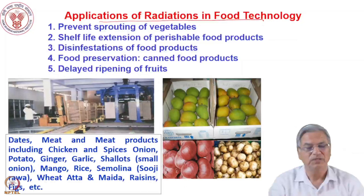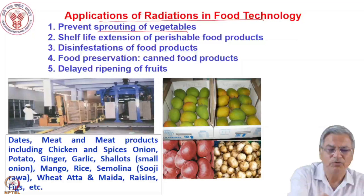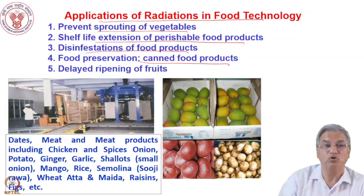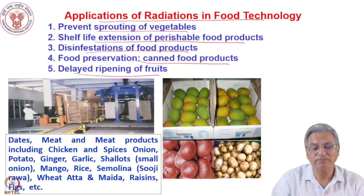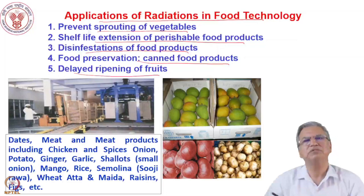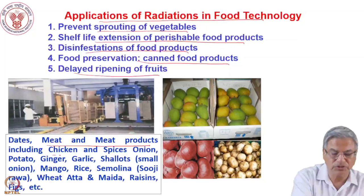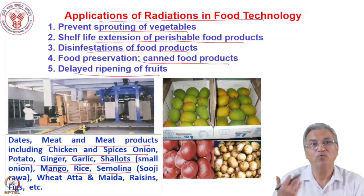In food technology, radiation can prevent the sprouting of vegetables by deactivating enzymes and killing bacteria, extending the shelf life of perishable food products by delaying microbial growth. Food products, spices, meat, canned foods can be preserved for longer times, and the ripening of fruits like mangoes can be delayed. Many products have been certified for irradiation by governments, including meat, chicken, spices, onion, potato, ginger, garlic, shallots, mango, and rice, to improve shelf life or perform disinfestation.